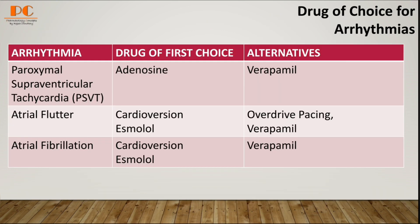If a patient is suffering from paroxysmal supraventricular tachycardia (PSVT), then we can use adenosine as the drug of choice. And for the alternative, we can choose verapamil, a calcium channel blocker.